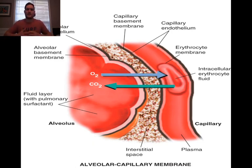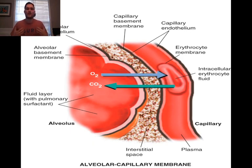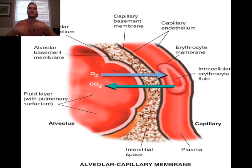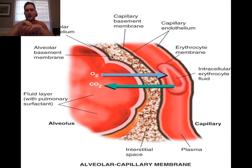Hello everyone and welcome to the second part of our lecture concerning the pulmonary response to exercise. In our first video we talked about how we move air in and out of our lungs, and we determined that the respiratory muscles help change the volume of our lungs, which changes the pressure inside. We also talked about different lung volumes and capacities, but today we're going to talk more about blood gases.